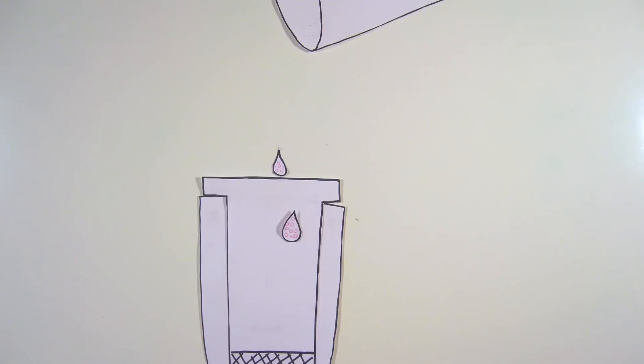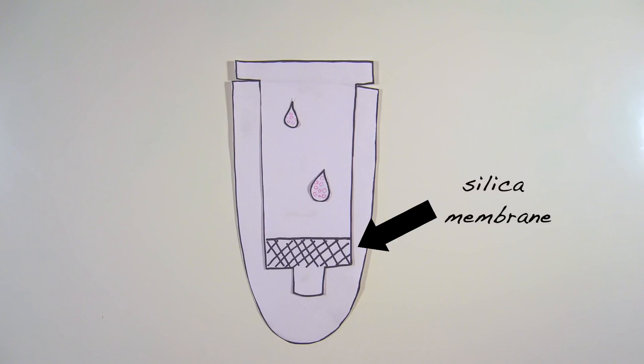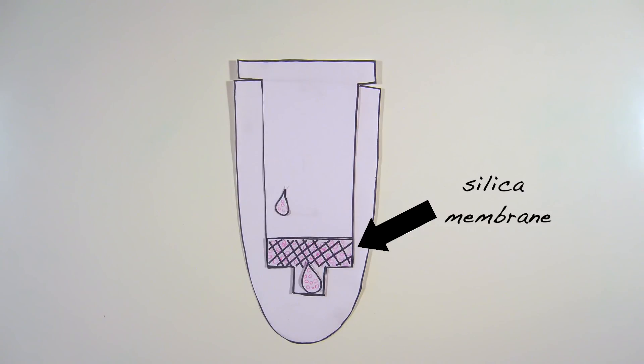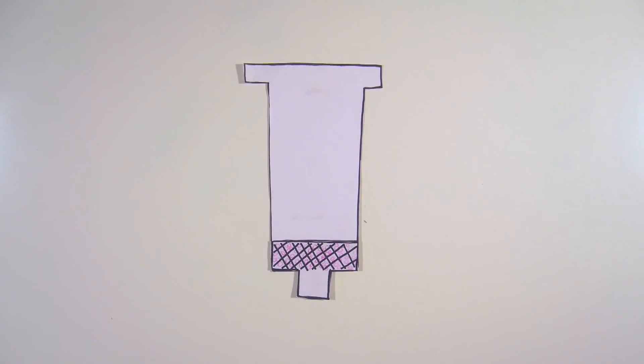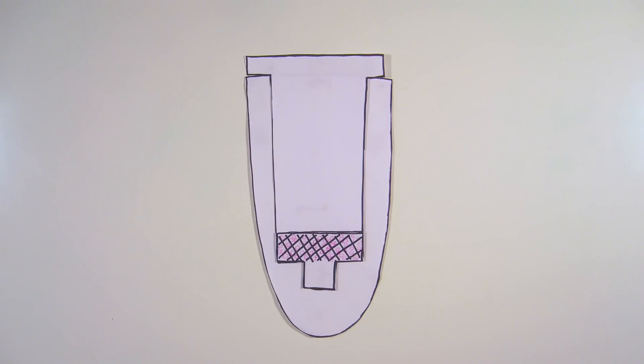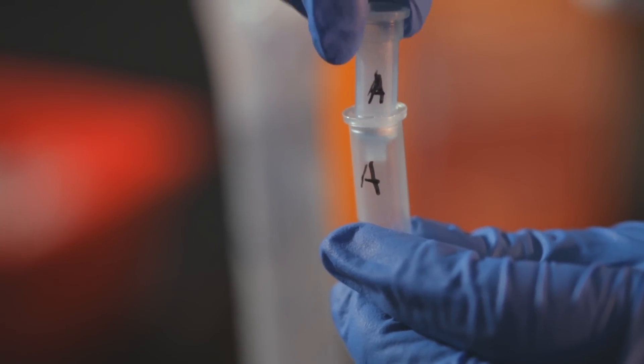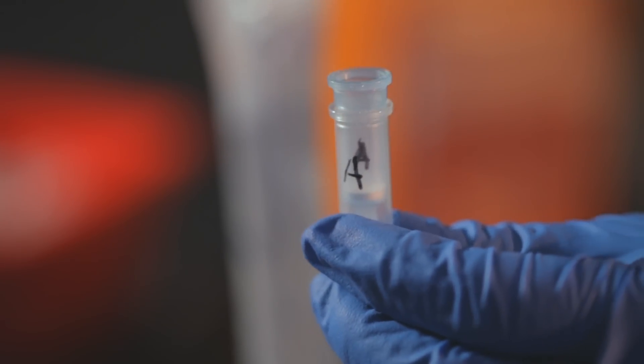The spin column contains a silica membrane that will tightly bind the plasmid DNA that is in the salty, buffered supernatant. Any remaining RNA, proteins, or other macromolecules pass through the membrane and are found in the flow-through after centrifugation. At this point, the DNA is bound to the silica matrix in the column.